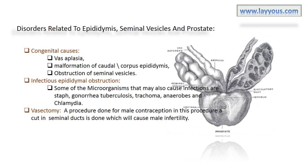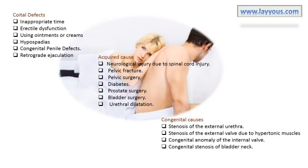For coital defects: inappropriate timing of intercourse — not at time of ovulation. Erectile dysfunction — it could be due to psychological, neurological, or vascular disorders, or as a side effect of some medications. Using certain ointments or creams at the time of intercourse, some of which may kill the sperm. Hypospadias — this means abnormal position of the urethral meatus. Congenital penile defects.